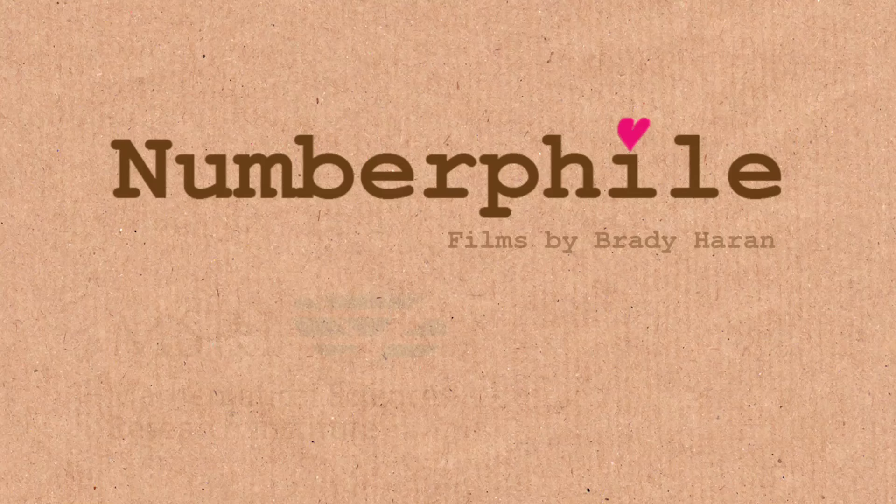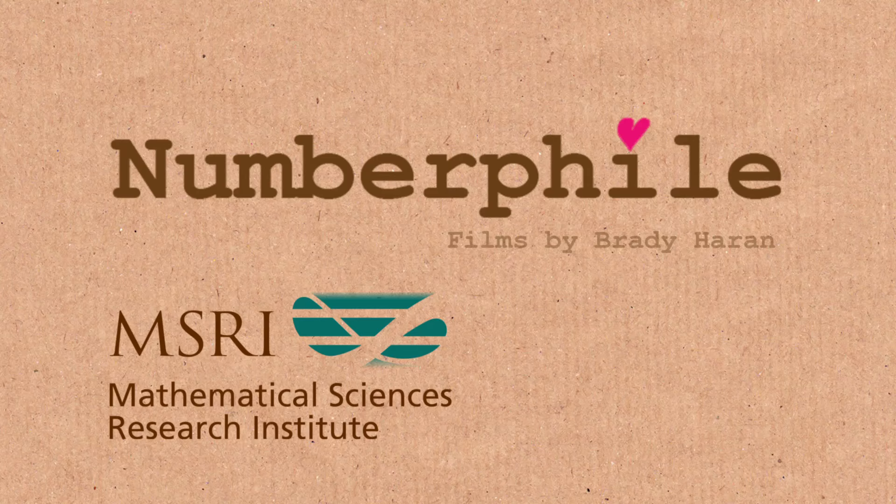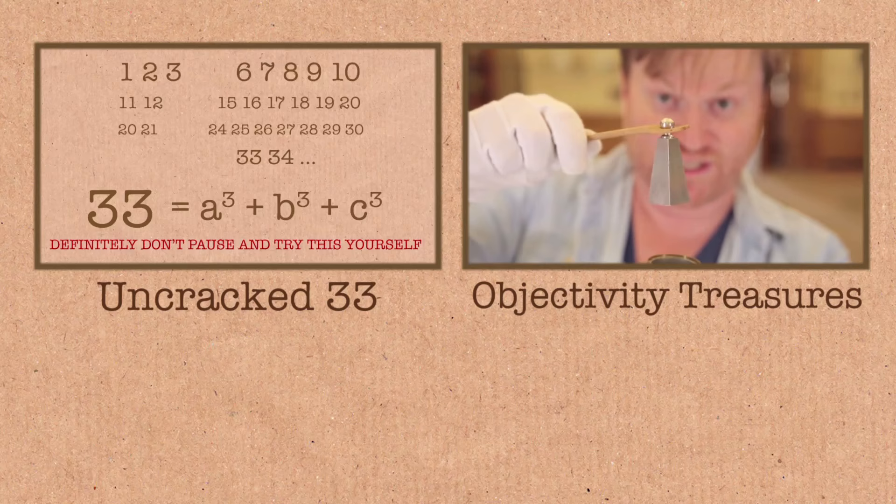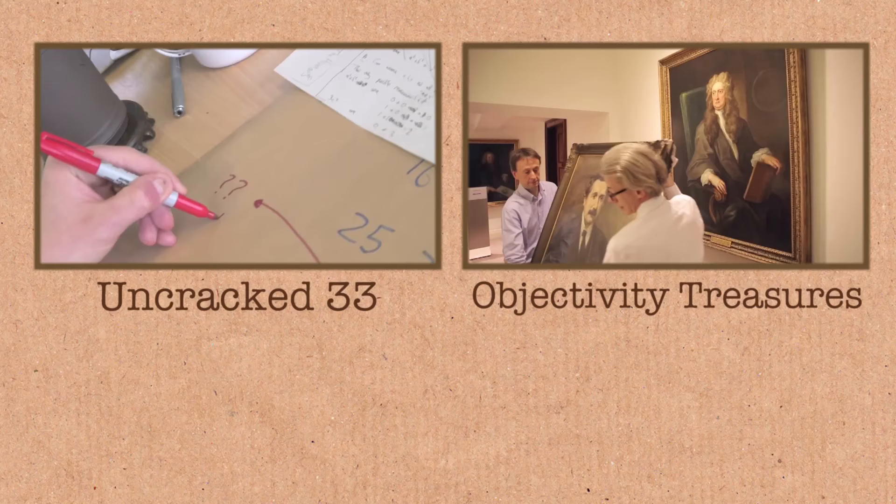We still don't know an answer to that one. So we've not yet been able to find any integers which when you sum their cubes, you get 33. The search has been pretty thorough. So far they've gone up to, I think they've gone up to the numbers of size 10 to the 14. So that's one with 14 zeros after it.